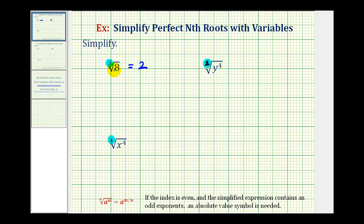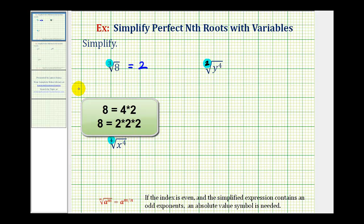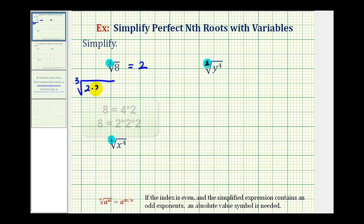This radical is going to simplify if eight contains three equal factors. So what we'll do is look at the prime factorization of eight. Well, we can write eight as two times two times two. And because the index is three, we're looking for three equal factors, which we have right here. Which means this is the perfect cube factor of eight. Therefore,